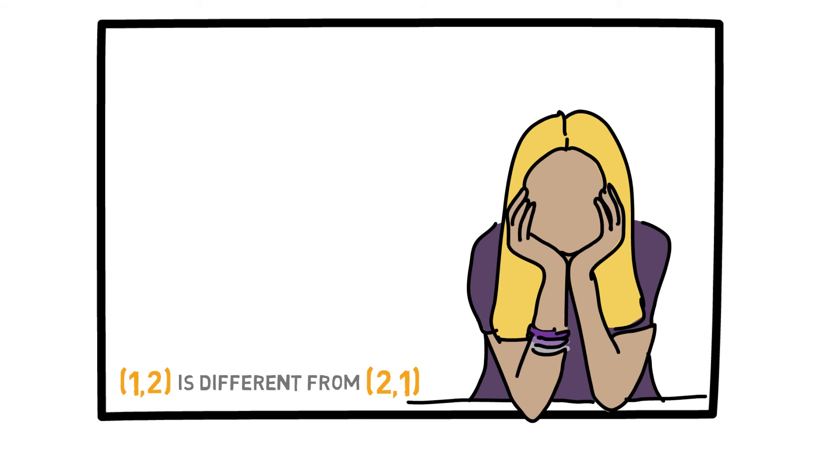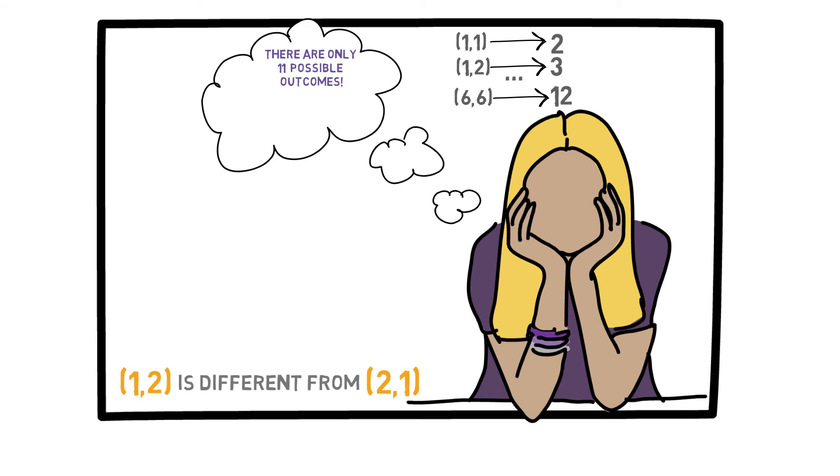Another possible mistake is that sometimes people say, if I roll a die twice, what are the possible outcomes? 1 and 1 is 2. 1 and 2 is 3. All the way up to 6 and 6 is 12. So they would think there are only 11 outcomes and 8 is just one of these numbers. So they think the probability is 1 out of 11, 1 over 11, which is incorrect. This is incorrect because these outcomes are not equally likely.